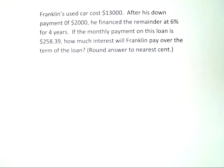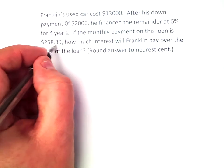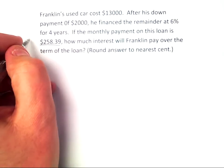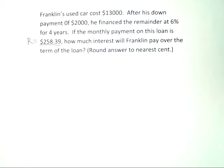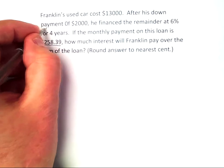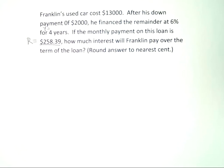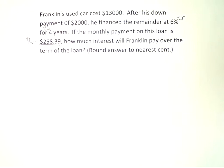This problem is different than the last couple we worked. They already told us what the monthly payment was — we've been calculating monthly payments, but here we already know the monthly payment. We also know it's a four-year loan, so T is 4. And we know it's a 6% interest rate, so little r is 0.06 as a decimal.